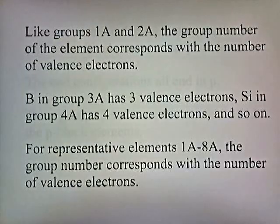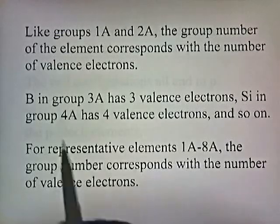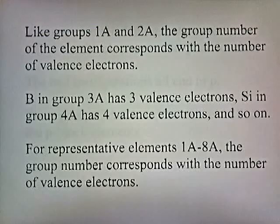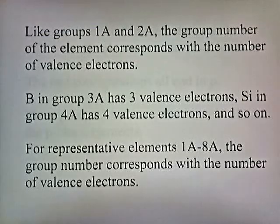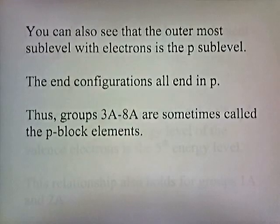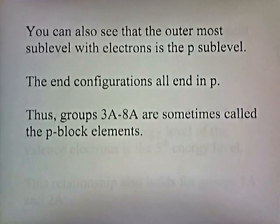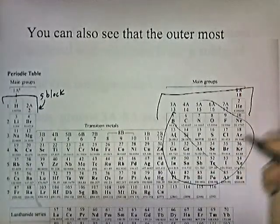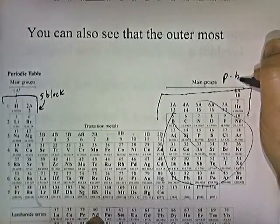So like groups 1A and 2A, the group number of the element corresponds with the number of valence electrons. For representative elements 1A through 8A, the group number corresponds with the number of valence electrons. The outermost sublevel with electrons is the p sublevel — the end configurations all end in p. So for groups 3A through 8A, these are sometimes called the p-block elements.